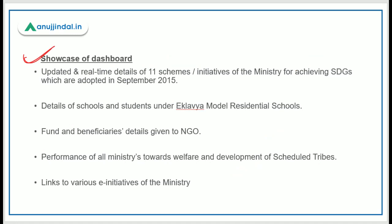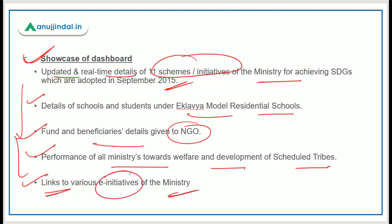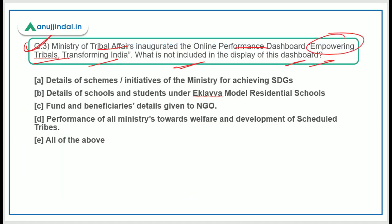The dashboard displays updated, real-time details of 11 schemes or initiatives run by the Ministry of Tribal Affairs for achieving Sustainable Development Goals, adopted in September 2015. It also shows details of schools and students under Eklavya Model Residential Schools, funds and beneficiaries details given to NGOs, performance of all ministries towards welfare and development of Scheduled Tribes, and links to various initiatives of the ministry.